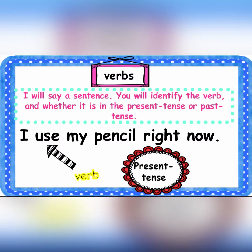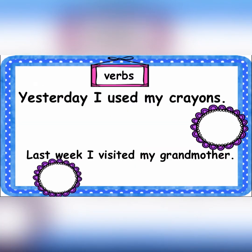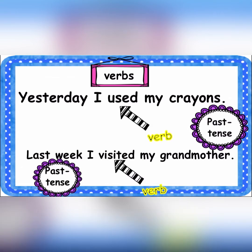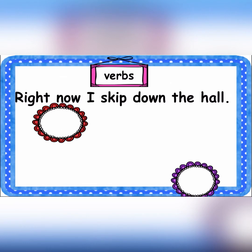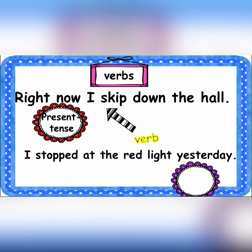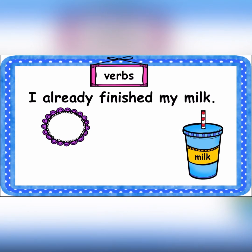It's present tense verb. Then 'yesterday I used my crayon' — is it present tense or past tense verb? It's past tense verb. 'Last week I visited my grandmother' — is it present or past tense verb? It's past tense verb. 'Right now I skipped down the hole' — is it present tense or past tense verb? It's present tense verb. 'I stopped at the red light yesterday' — past tense verb. 'I already finished my milk' — it's past tense verb.